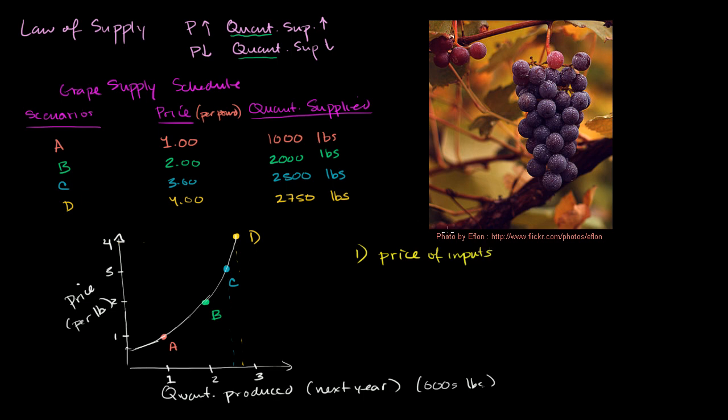If the price of inputs—the price of labor to pick the grapes, fuel to transport them, or land—if any of that increased, then at a given price point we would make less money. There's less incentive to do it, especially if this is true only for grapes. If it's now more expensive to get grape seeds, maybe I'll start planting something else because I'm not getting as much profit per pound of grape.